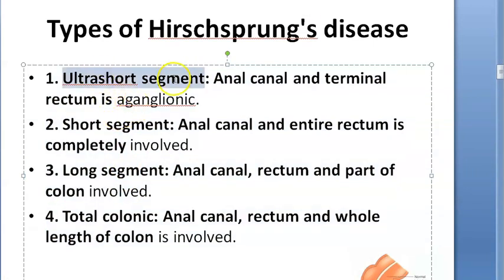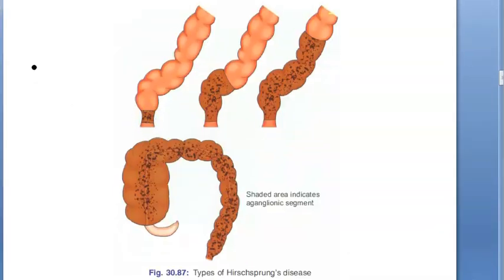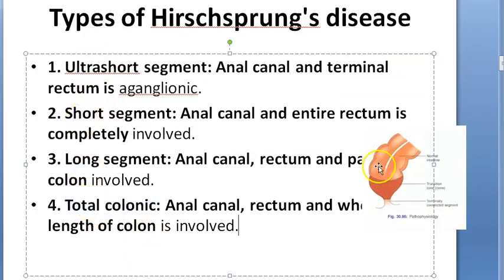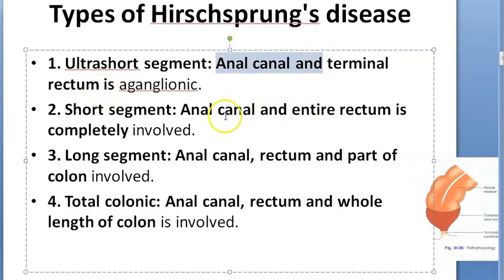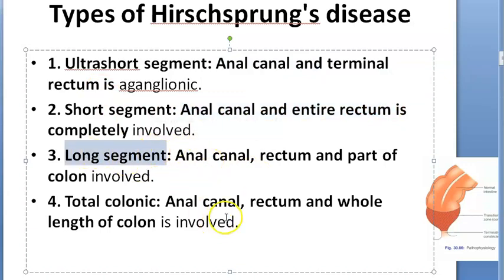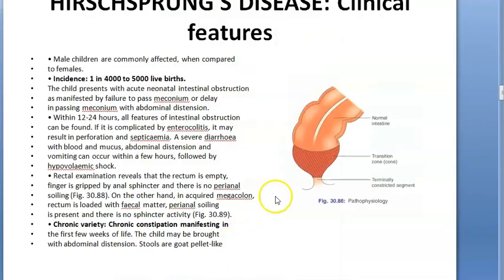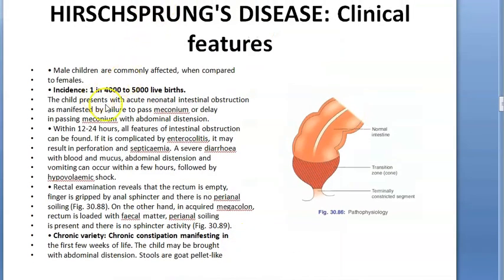There are types of Hirschsprung's disease: ultra short segment, short segment, long segment, and total colonic. Ultra short involves the anal canal and terminal rectum. Short involves the anal canal and entire rectum. Long involves a greater segment, and total means the entire colon is affected.